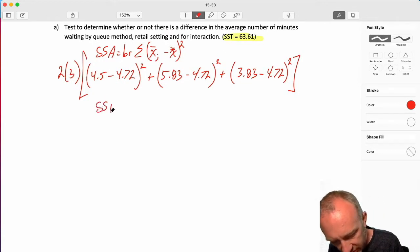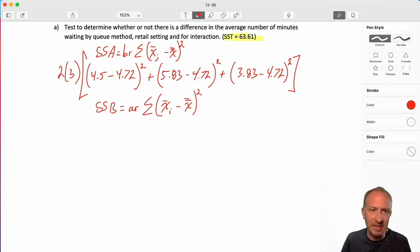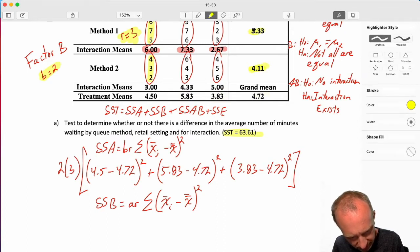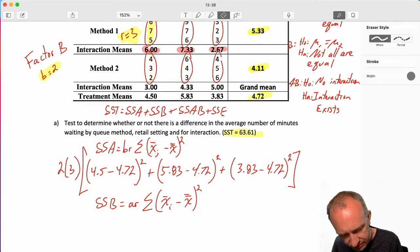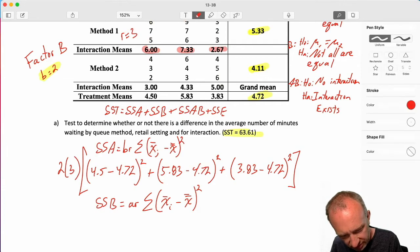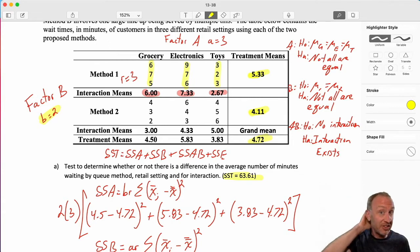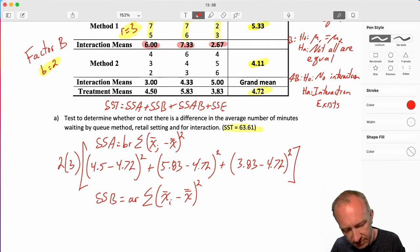Good. A little bit quicker than the last one. Now, we're going to do sums of squares across treatments in factor B. And very much the same calculation. Only now, I'm looking at these treatments. And always the grand mean. And A times R. Of course, that's the number of observations in each of those treatment means. I can see I have 3, 6. I have 9 observations. A times R. Well, that's just 3 times 3. 9 observations.